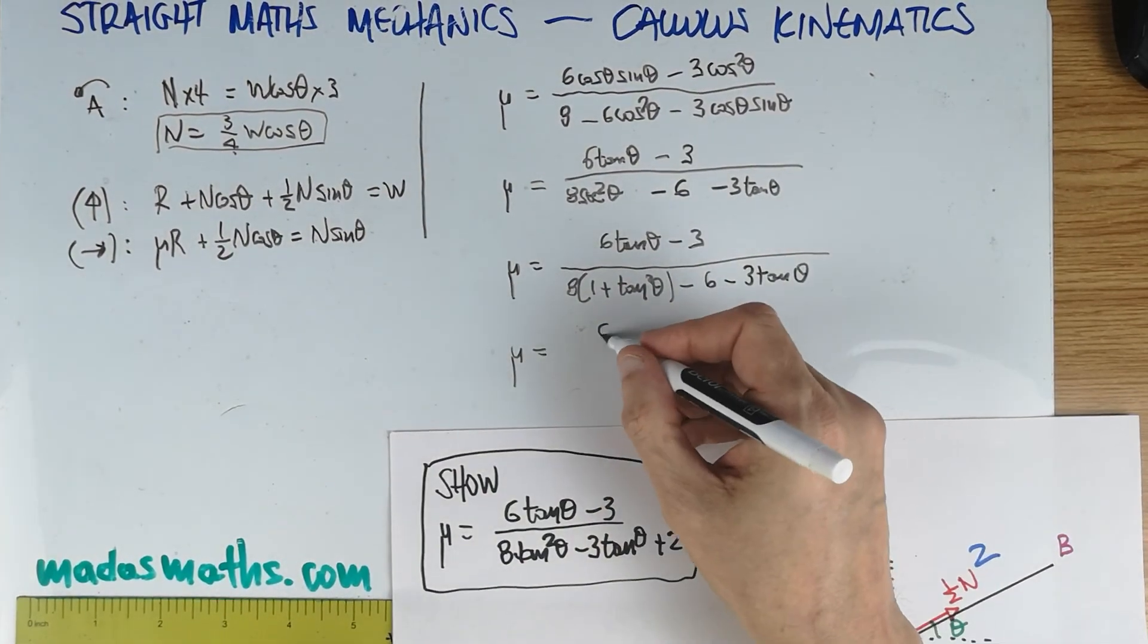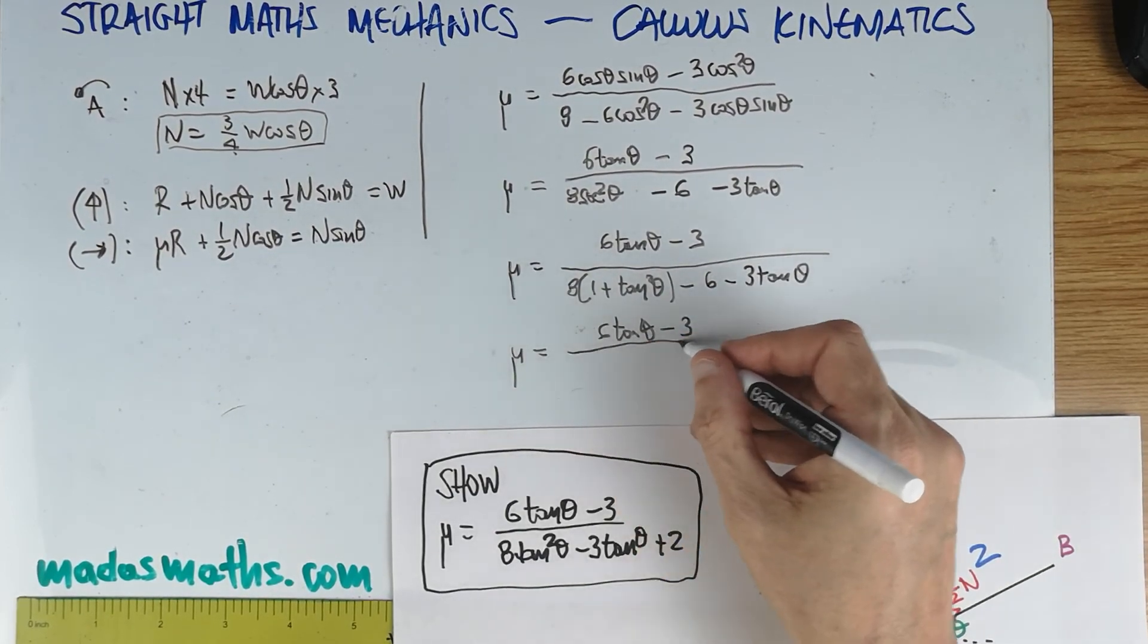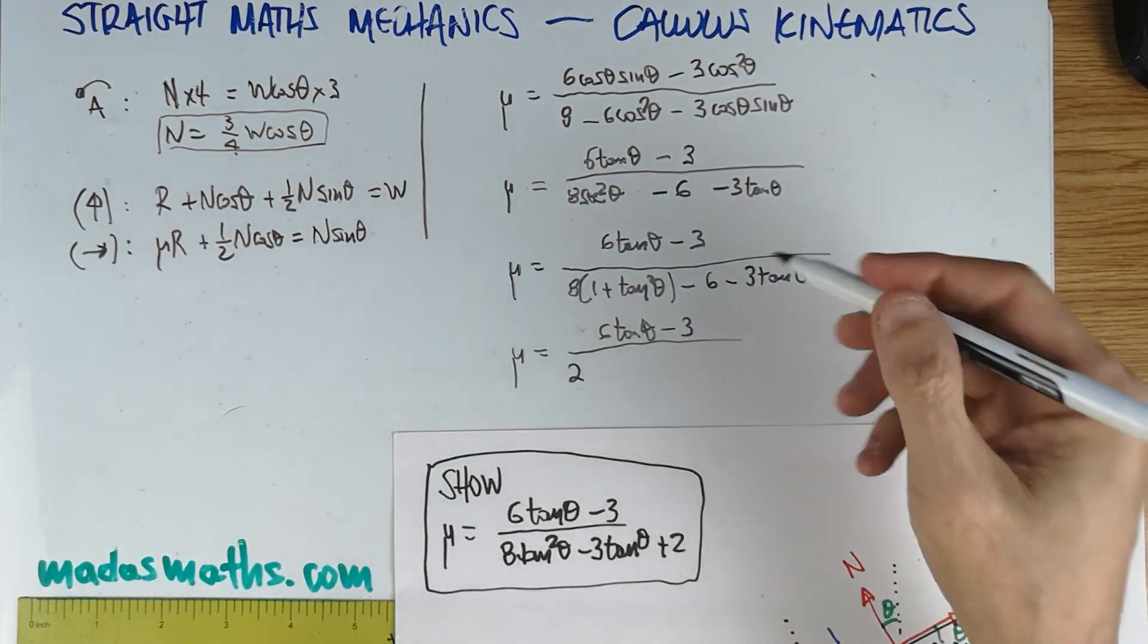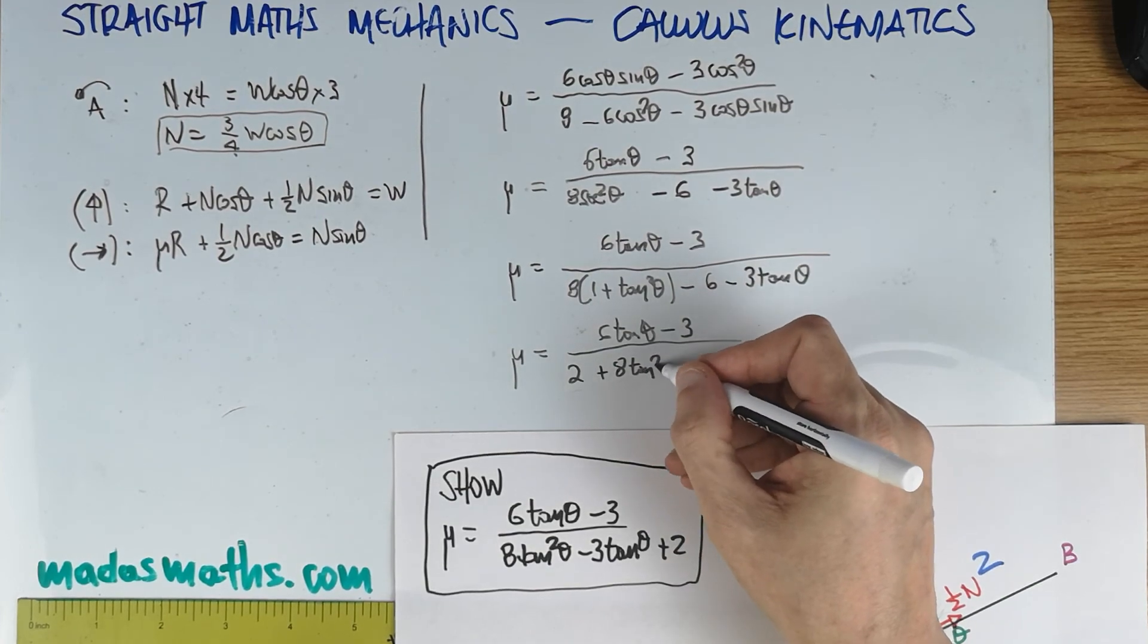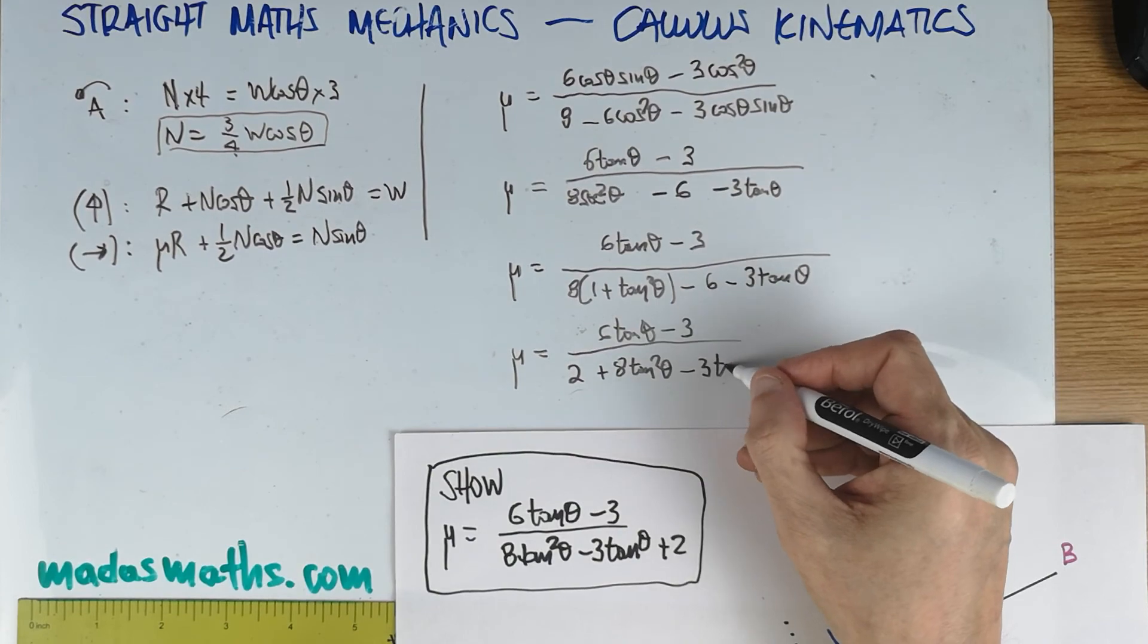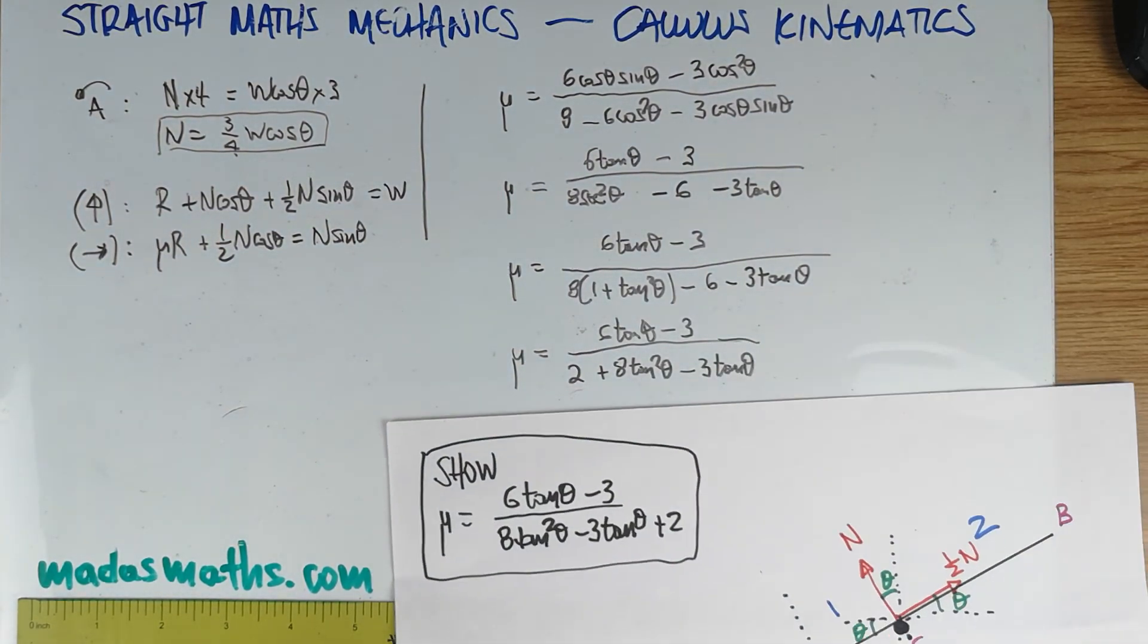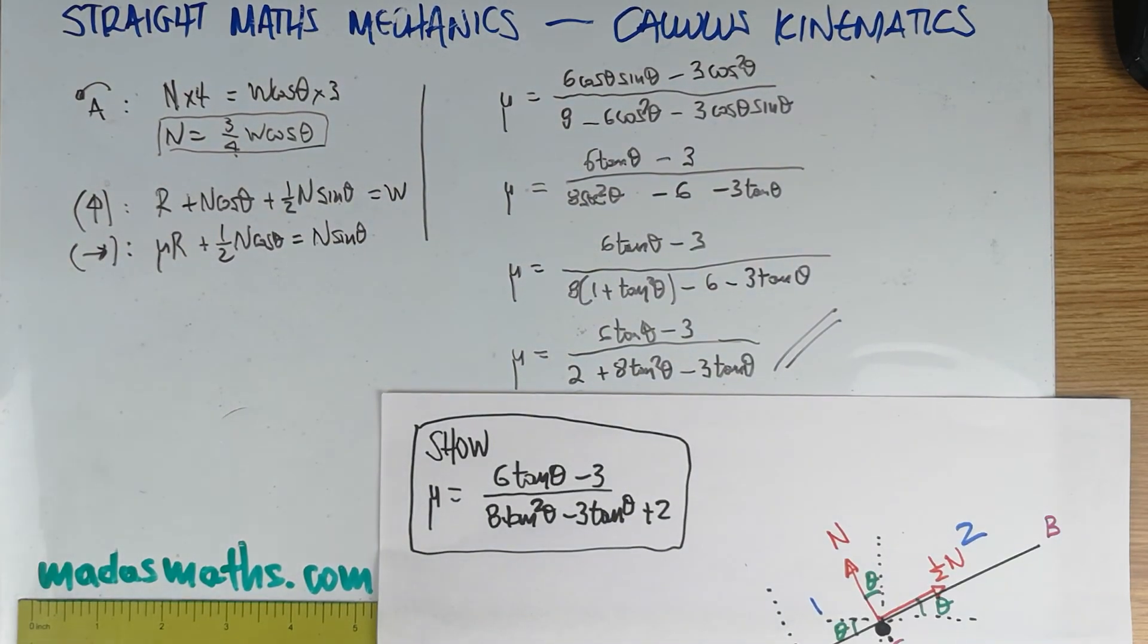We have practically what's there, apart from the sec squared. There's an identity from pure maths which we must remember is not being given. So sec squared is one plus tan squared of θ. So μ is equal to six tan θ minus three divided by eight plus eight tan squared θ from this bracket minus six minus three tan θ. And I'm not rewriting. It's exactly the same thing if you look at the show. And the question is now complete.